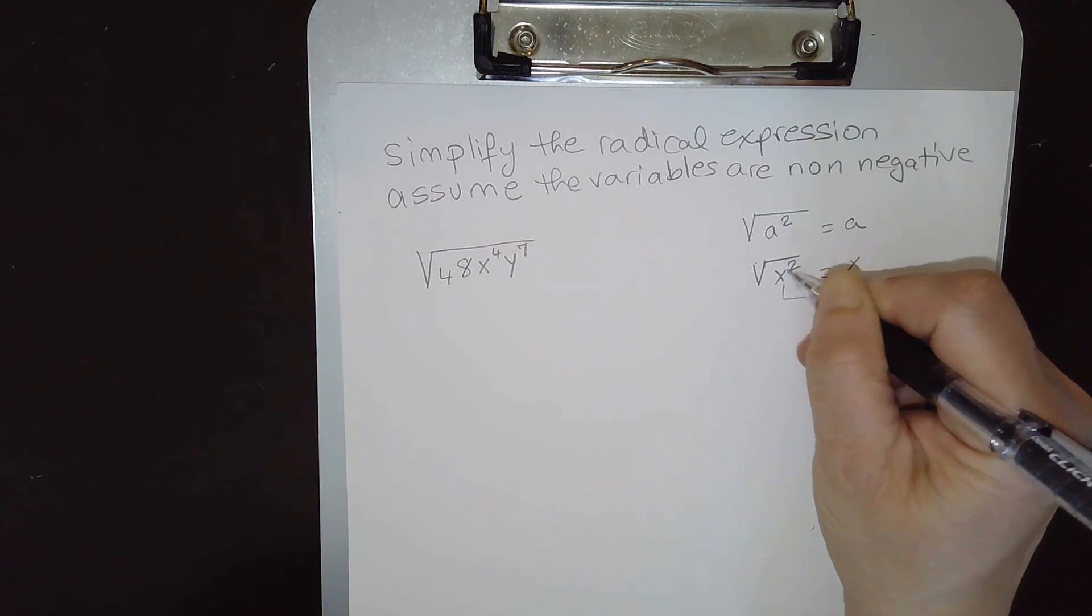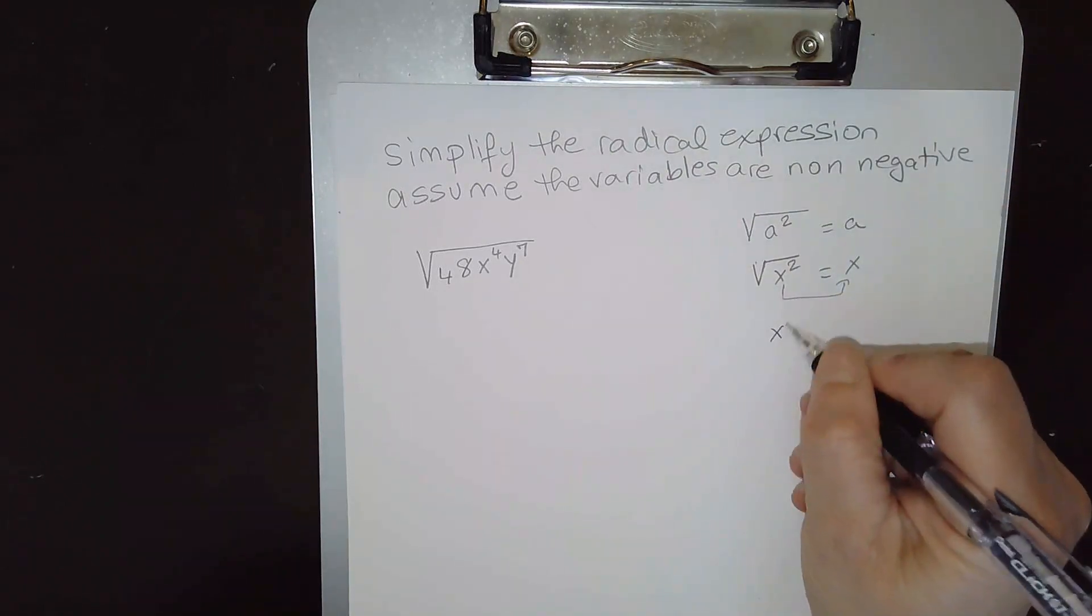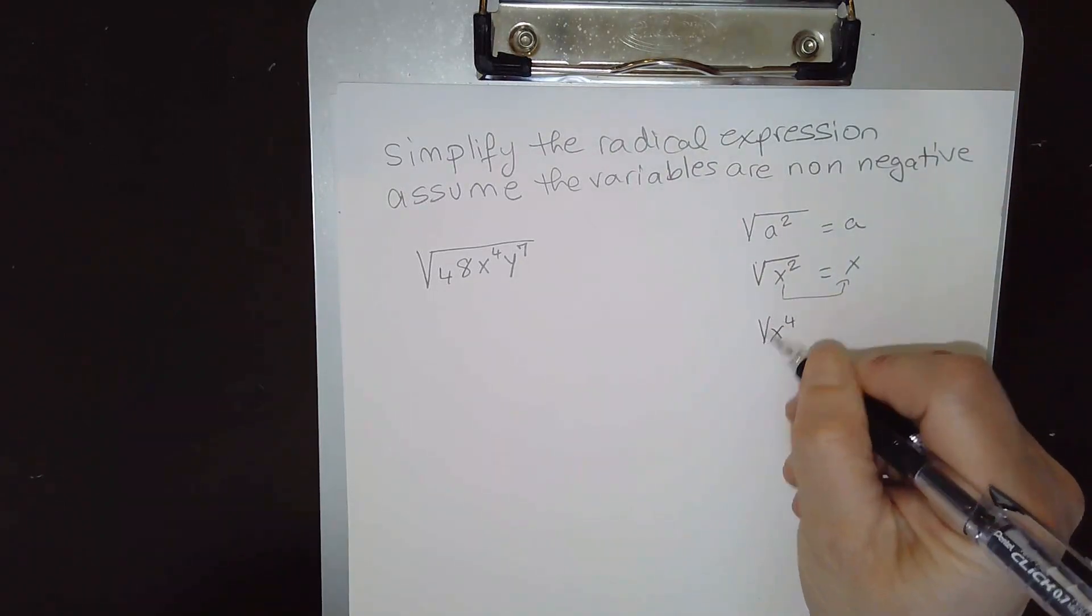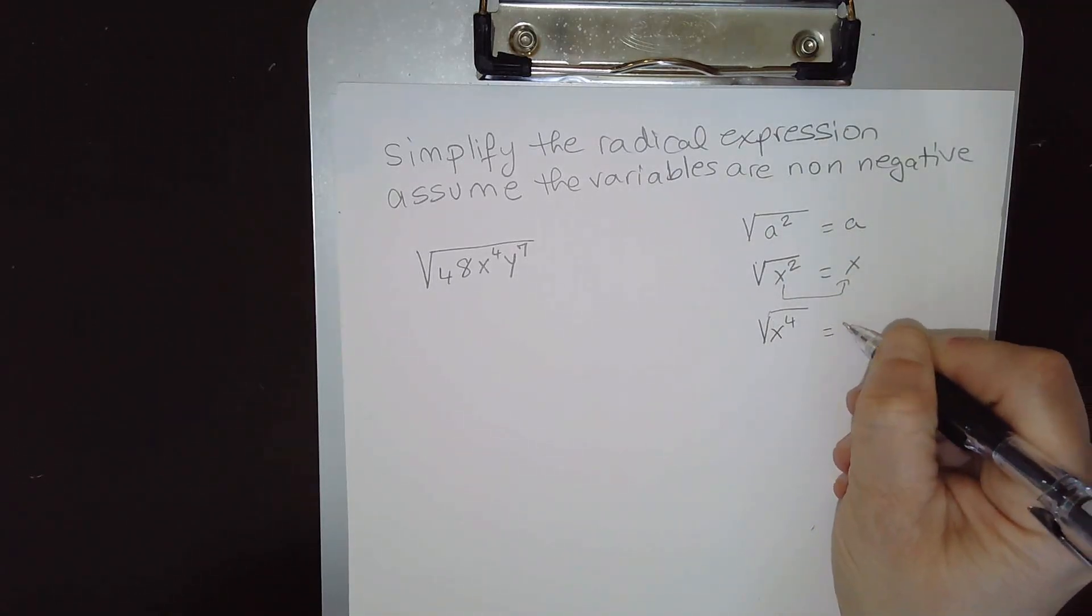If the power is even, then the expression is a perfect square. So x⁴ is a perfect square. Why? Because when you take the square root of x⁴, this is going to come out as x².